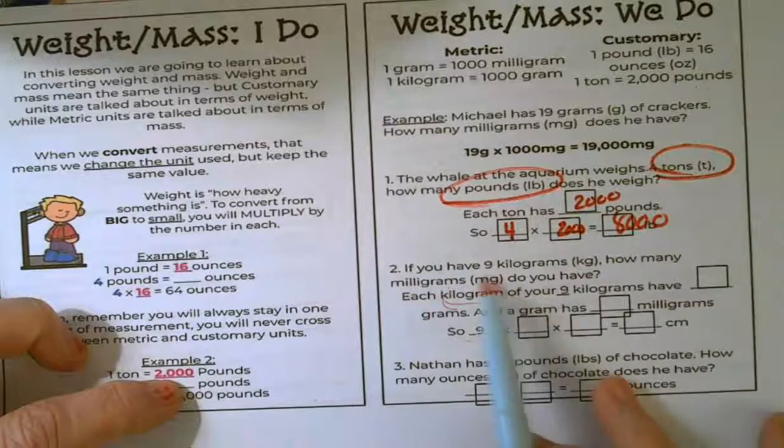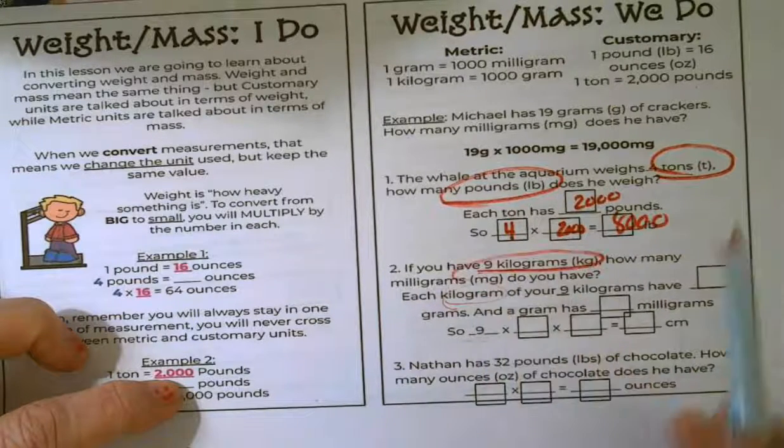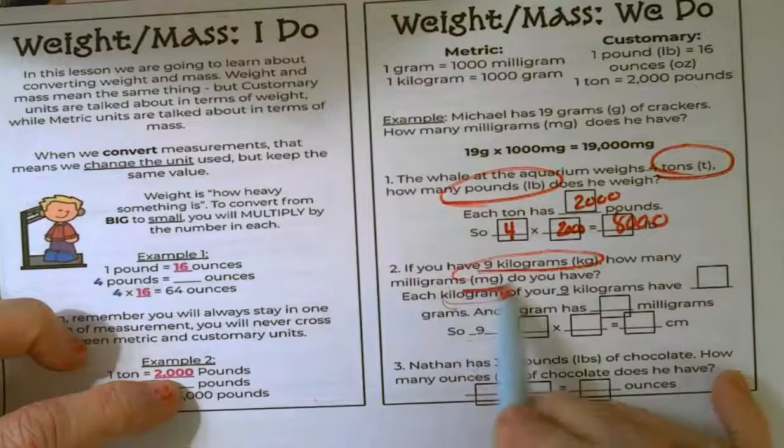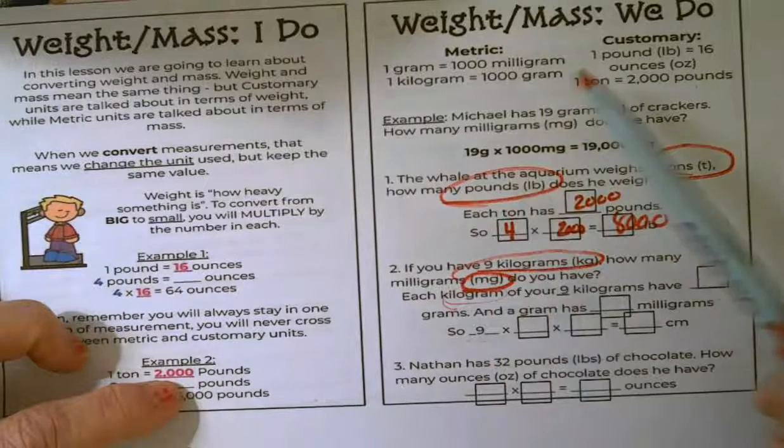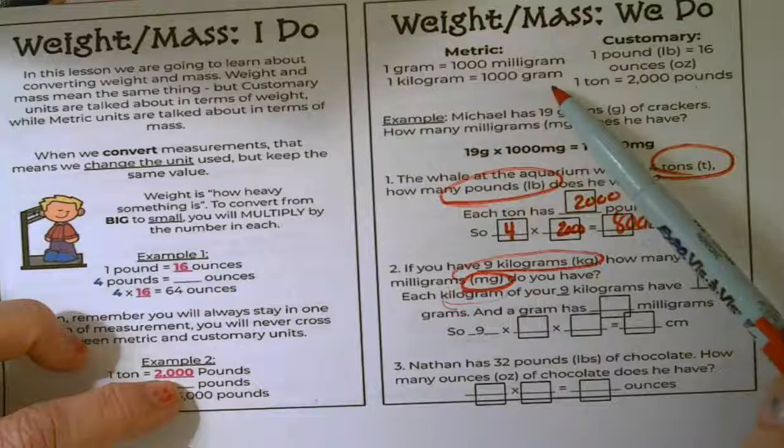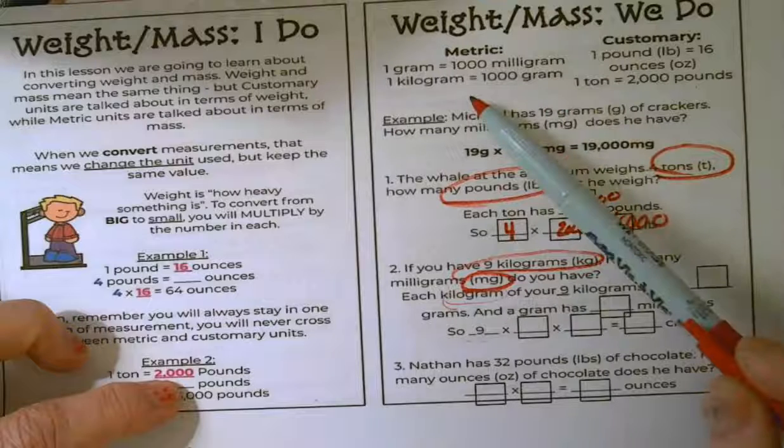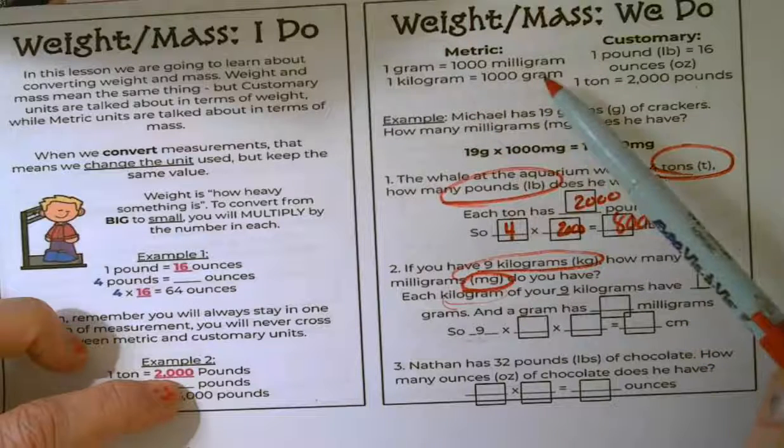Number two, you had 9 kilograms and you are converting it to milligrams. Now in our chart, there is no equivalency of milligrams to kilograms. So you're going to have to do two steps here.